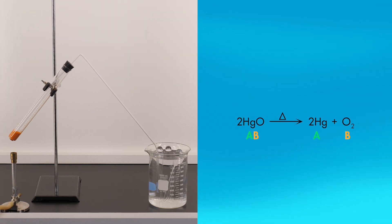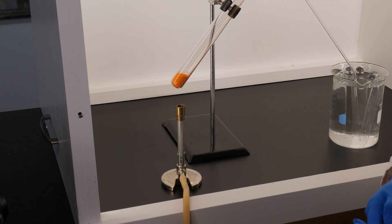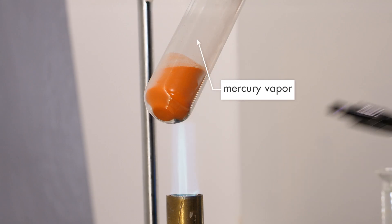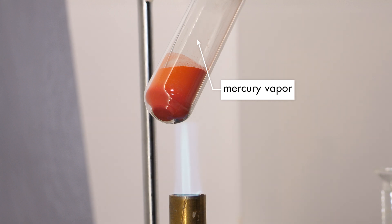Here is the chemical equation for the decomposition of mercury(II) oxide. Notice the triangular symbol above the reaction arrow in the chemical equation. This symbol indicates that heat must be applied to cause this reaction to begin. When the compound is heated, thermal decomposition begins. The heat energy breaks the chemical bonds between the mercury and oxygen, and mercury vapor is formed.